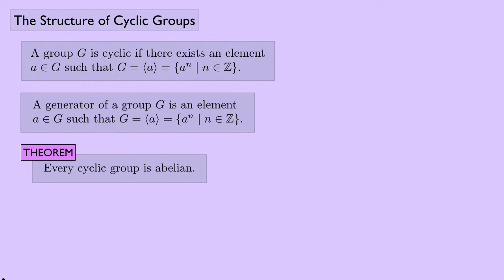Every cyclic group is abelian. Cyclic groups can be infinite — like Z, the set of integers under addition — or finite, like Z sub n, the set of integers under addition mod n. These are great examples to keep in mind, and we'll see later that in a certain sense these are the only cyclic groups you need to worry about.